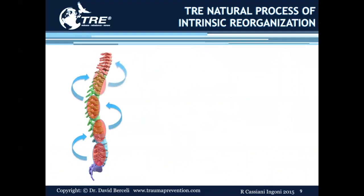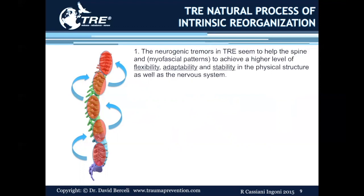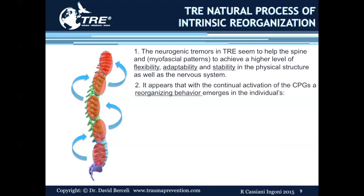This inclusion of central pattern generators into the TRE process helps to reinforce the natural process of intrinsic reorganization — meaning the body is doing the reorganization within itself, independent of cognition. The neurogenic tremors in TRE seem to help the spine and myofascial patterns to achieve a higher level of flexibility, adaptability, and stability in the physical structure as well as the nervous system. It appears that with the continual activation of the central pattern generators, a reorganizing behavior emerges in the individual spine, nervous system, and myofascial system.